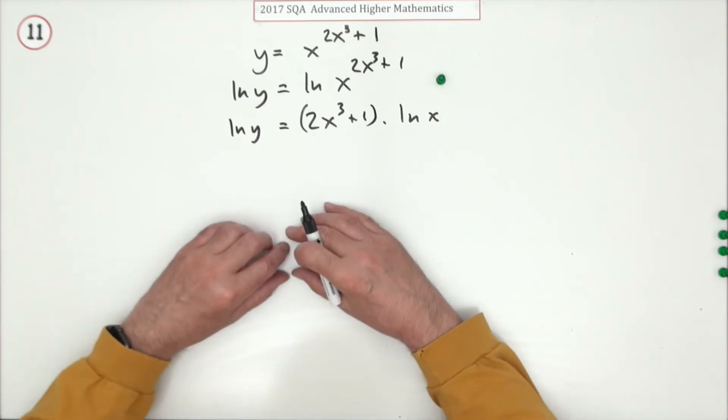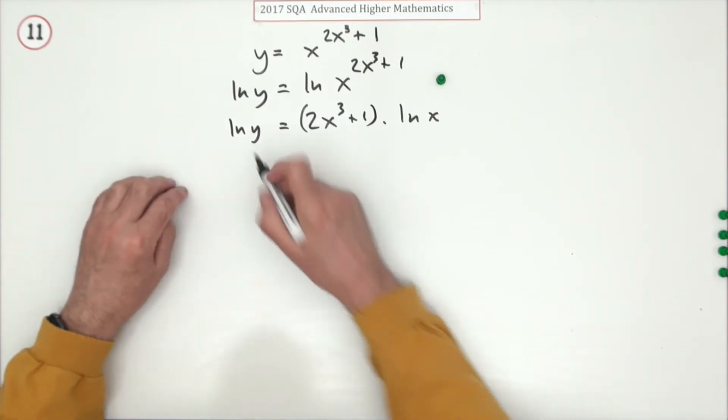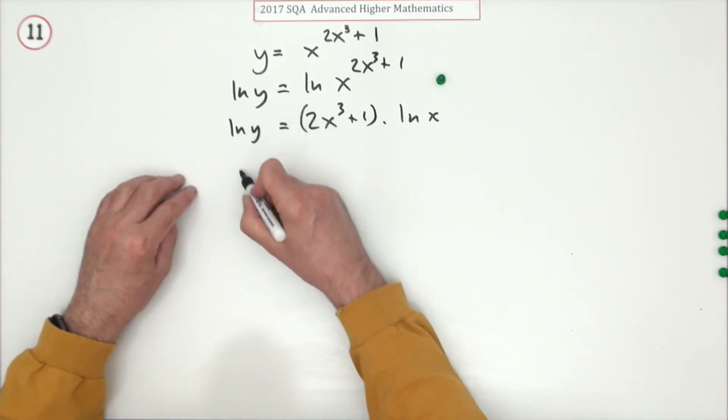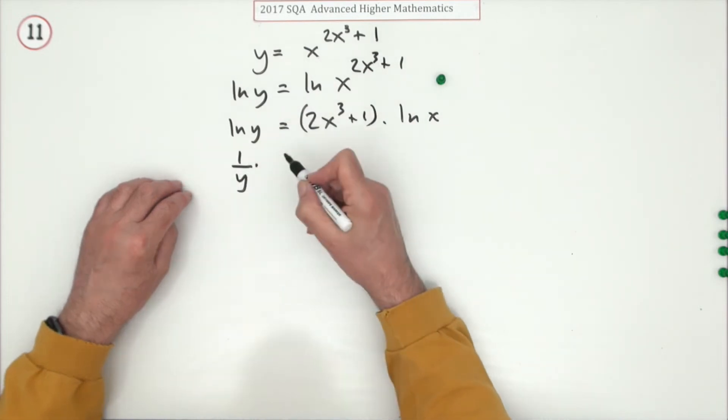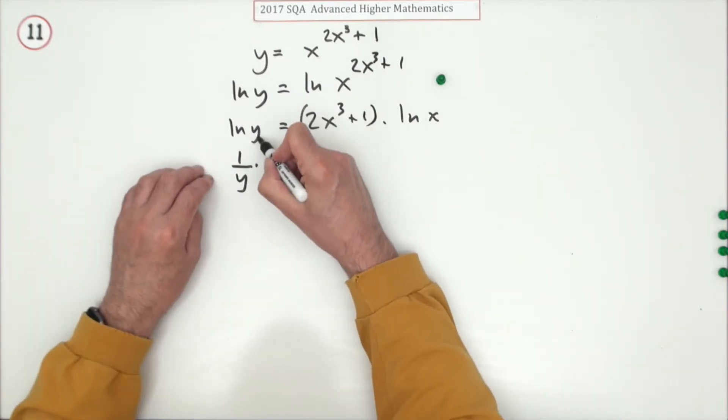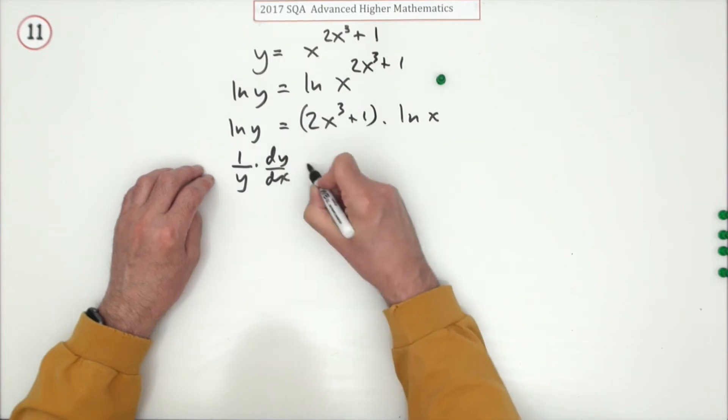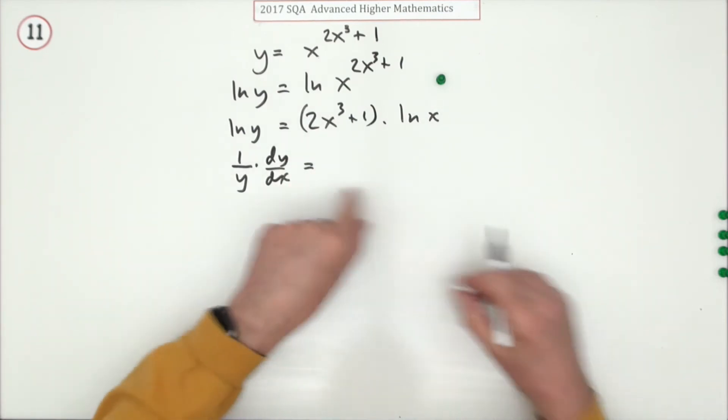Now you start the differentiation. This side, first of all, that's a function of a function, so first of all differentiate with respect to y. So ln of y would just be 1 upon y. Now multiply by the derivative of y itself, since y is a function of x, dy by dx. Now you've got a product, you get a mark for doing that part.